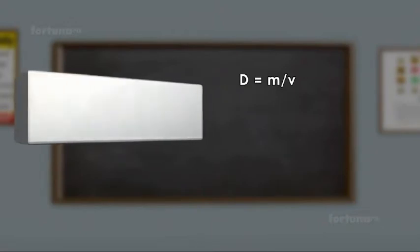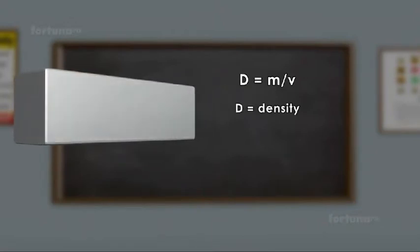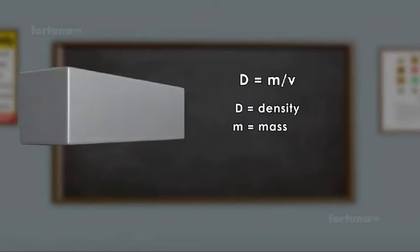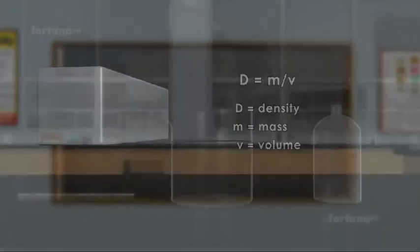If we wanted to express it as a mathematical equation, D is equal to M divided by V, where D is the density, M is the mass, and V is the volume. We know that all objects are composed of molecules.